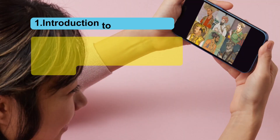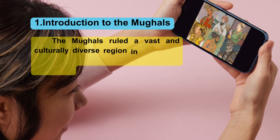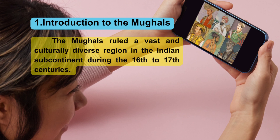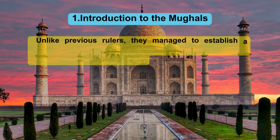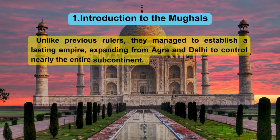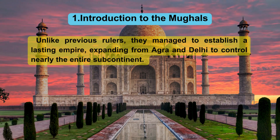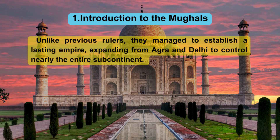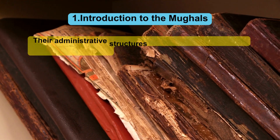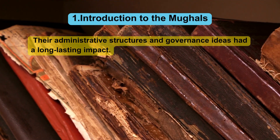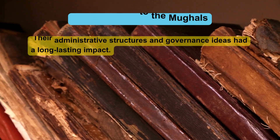Let's start. 1. Introduction to the Mughals. The Mughals ruled a vast and culturally diverse region in the Indian subcontinent during the 16th to 17th centuries. Unlike previous rulers, they managed to establish a lasting empire, expanding from Agra and Delhi to control nearly the entire subcontinent. Their administrative structures and governance ideas had a long-lasting impact.